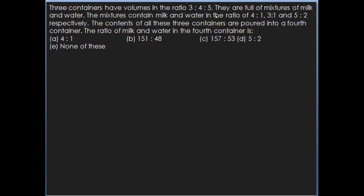The next question: three containers have volumes in the ratio 3 is to 4 is to 5. They are full of mixtures of milk and water. The mixture contains milk and water in the ratio 4 is to 1, 3 is to 1, and 5 is to 2 respectively. The contents of all three containers are poured into a fourth container. Find the ratio of milk and water in the fourth container.